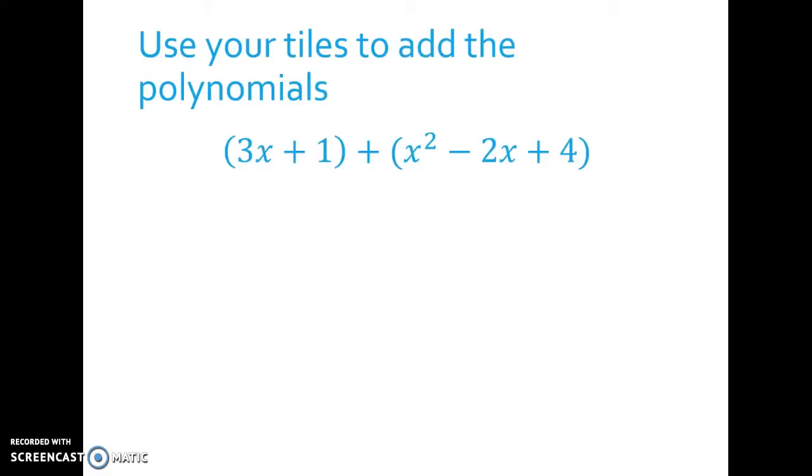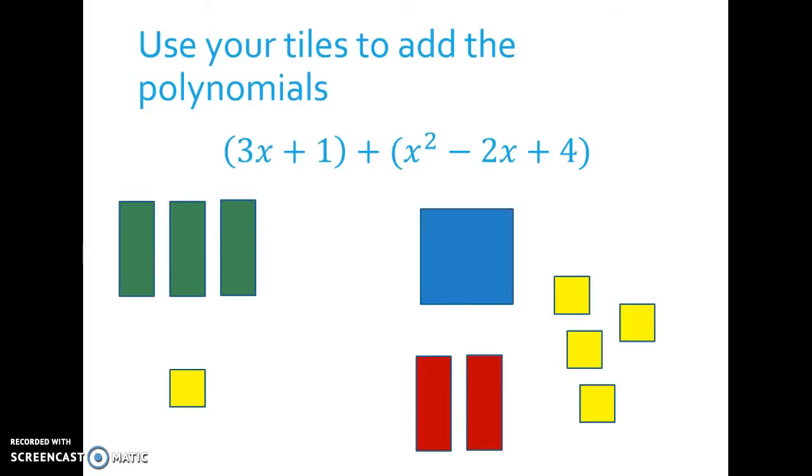The way we use tiles to add polynomials is we build each polynomial first and then we add what we call like terms, or when it's tiles, we add shapes that are the same. So if I want to build 3x plus 1, I would have three skinny rectangles and one unit block. And then if I want to have x squared minus 2x plus 4, I'd have an x squared block, two red x blocks, and then four ones.